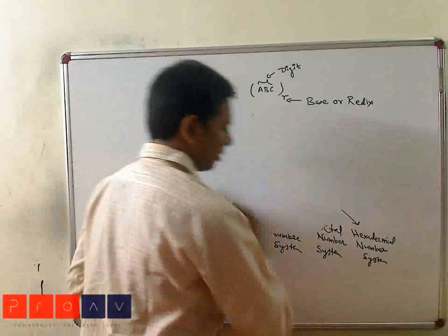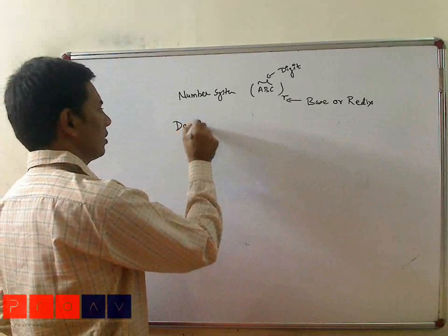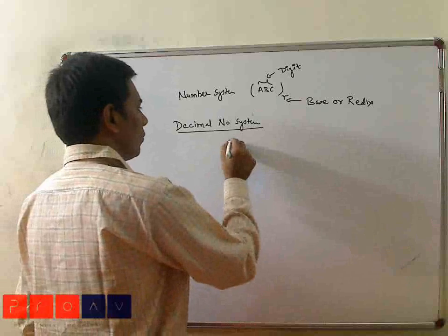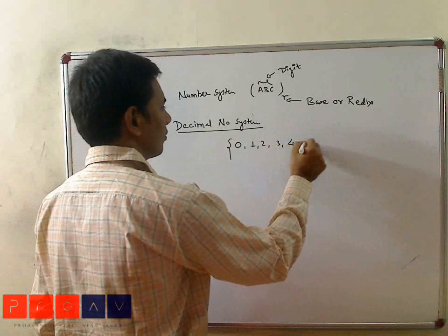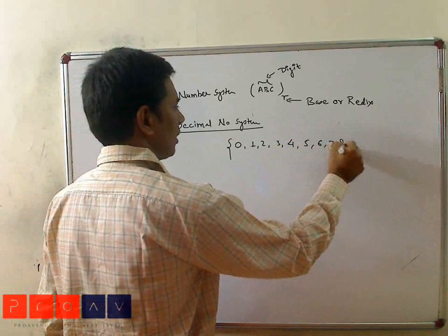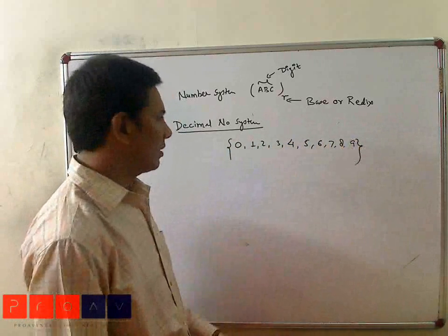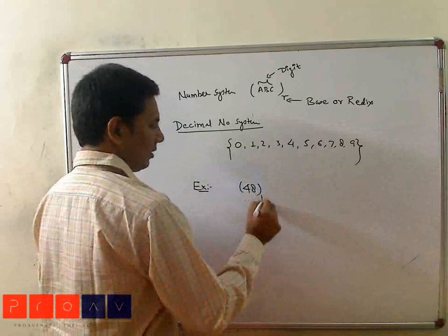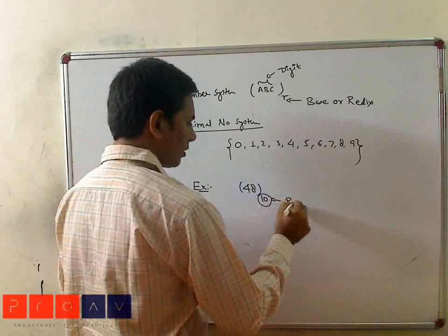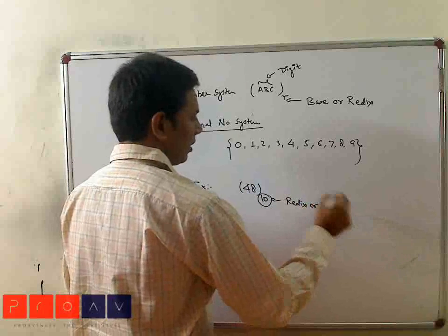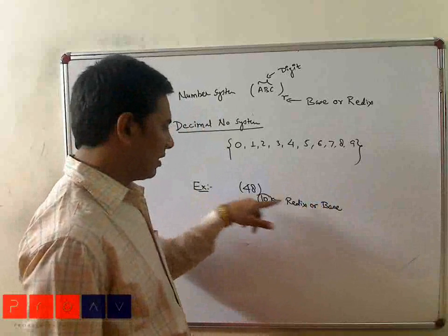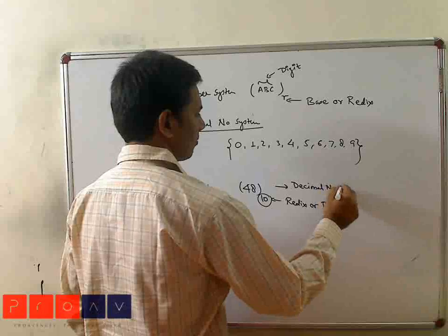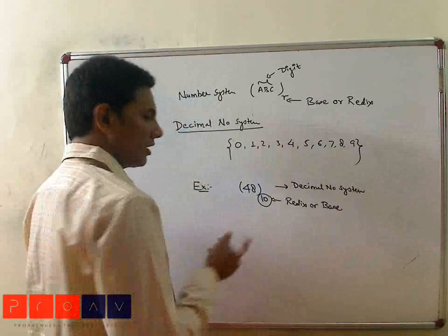For example, if we consider the decimal number system, we have digits 0, 1, 2, 3, 4, 5, 6, 7, 8, and 9 — these are the basic digits used in the decimal number system. For example, 48 with base 10. This base 10 is called the radix, or base. The property of the number 48 is defined by this radix. That's why this is called the decimal number system — because its base is 10.